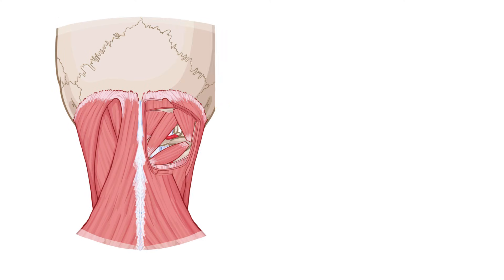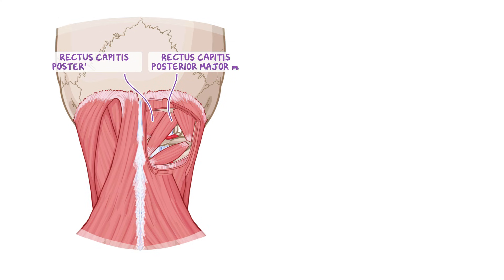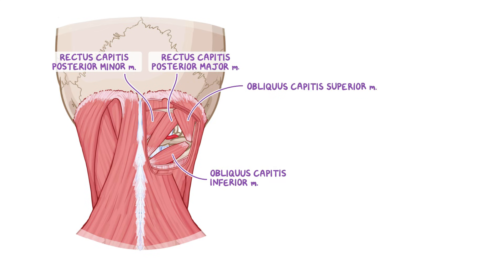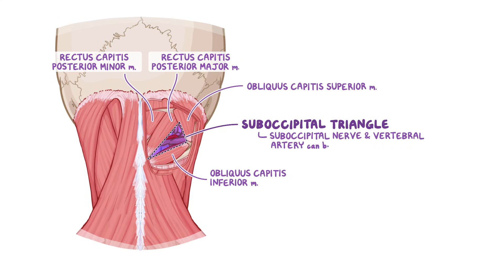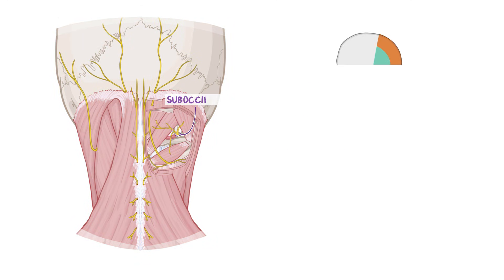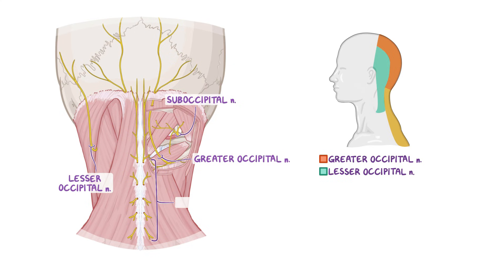As a quick recap, the suboccipital region houses four muscles: rectus capitis posterior major, rectus capitis posterior minor, the obliquus capitis superior, and the obliquus capitis inferior. The rectus capitis posterior major muscle, obliquus capitis superior muscle, and the obliquus capitis inferior muscle form the boundaries of an area called the suboccipital triangle. The suboccipital nerve and vertebral artery can be found within this triangle. The suboccipital nerve innervates the suboccipital muscles, and the cutaneous sensation to the entire posterior cervical region is provided by the greater occipital and lesser occipital nerves and the posterior rami of spinal nerves C3 to C7.